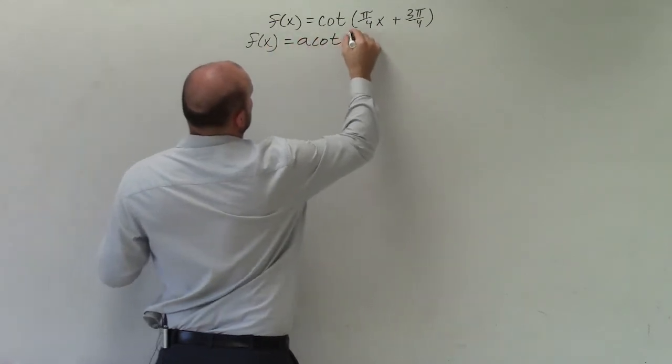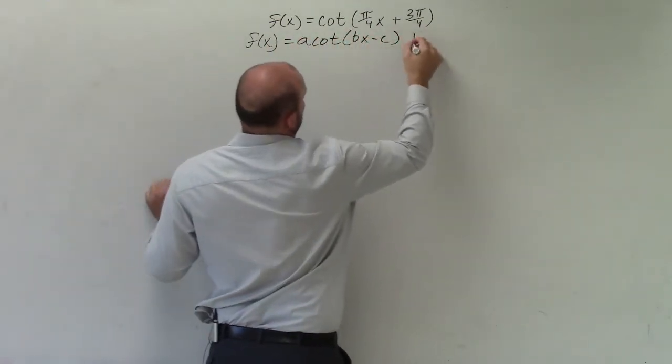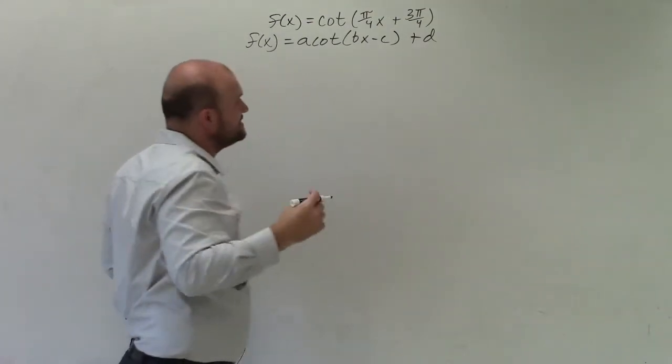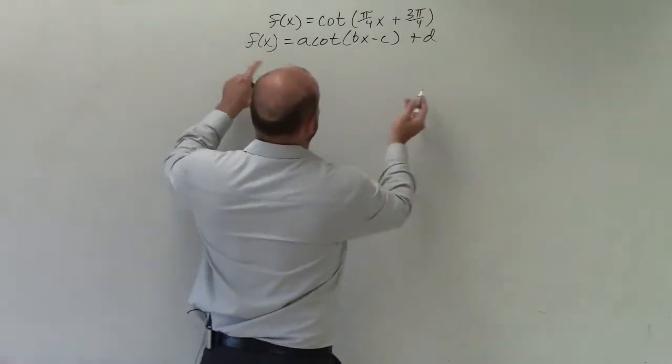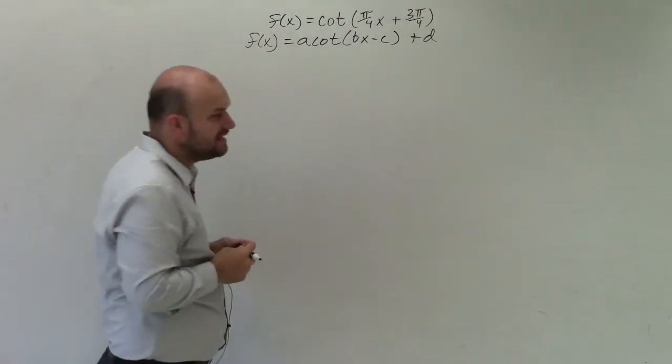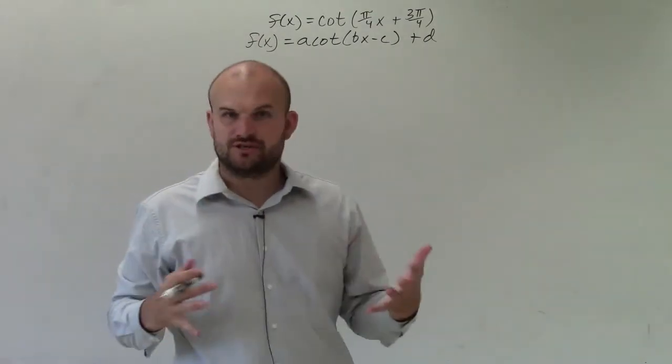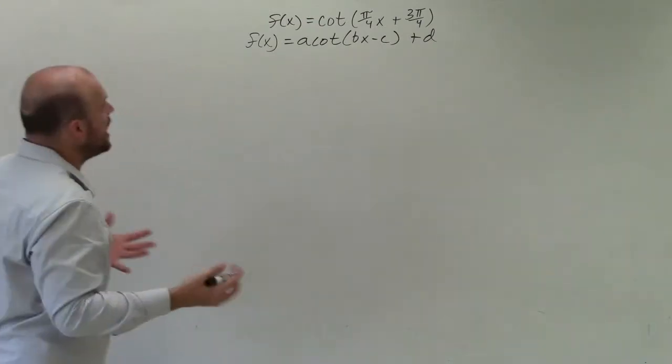Which is a times cotangent of bx minus c plus d, where a, b, c, and d are all going to affect our graph in some way. I don't have an a and a d. The only thing I have is a b and a c, which is going to affect my graph.